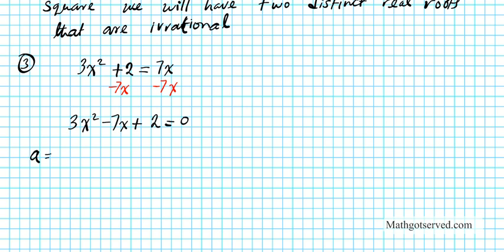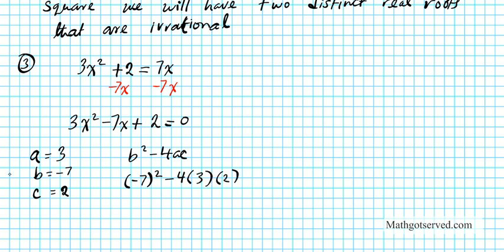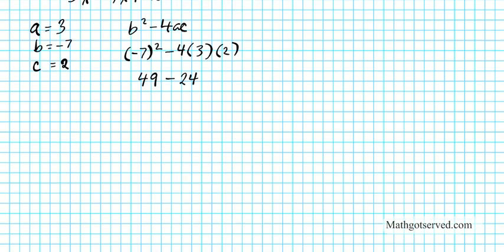This formulation enables us to determine a, which is 3; b, which is negative 7; and c, which is 2. So b squared is negative 7 squared minus 4 times 3 times 2. We'll work this out: 49 minus — 4 times 3 is 12, and 12 times 2 is 24. So when we subtract, our answer is going to be 25.